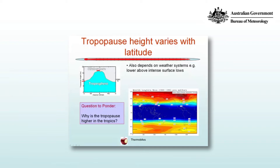The tropopause is this thin region between the troposphere and the stratosphere. That's shown as a map on the right, which is the monthly long-term mean between 1968 and 1996, giving pressure in millibars — the same units as hectopascals, which is the standard pressure unit used in the Bureau of Meteorology. The height of the tropopause is pretty much constant through much of the tropics between about 30 south and 30 north, there's a very strong gradient in the mid-latitudes between about 30 and 60 north and south, and then at high latitudes it's pretty much uniform again as a minimum.